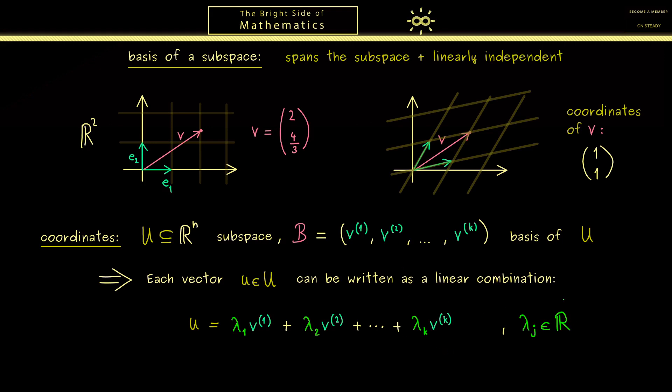And now you already know these coefficients we now call the coordinates of the vector u with respect to the basis B. And indeed an important thing to note here is that these coefficients are uniquely determined because our family for the basis is linearly independent. So there is only one way to write a linear combination for vector u.